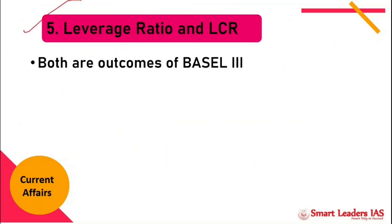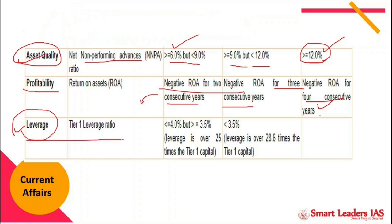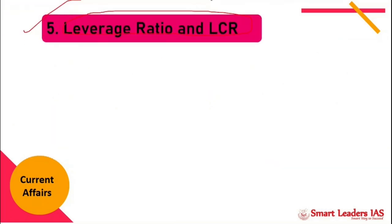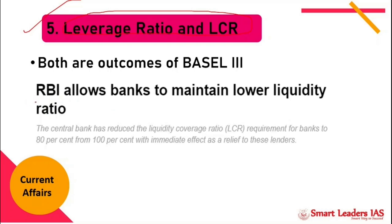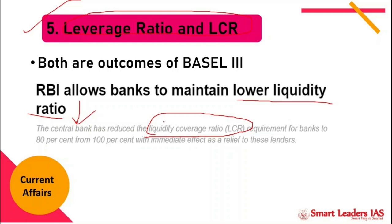The next topic is the leverage ratio and LCR, which have been in the news. The leverage ratio is the fourth pillar of PCA and an important outcome of Basel 3. In April 2020, following the coronavirus aftermath and banks facing financial stress, the RBI allowed the liquidity coverage ratio to be reduced. The leverage ratio tells us how much above capacity a bank is operating.